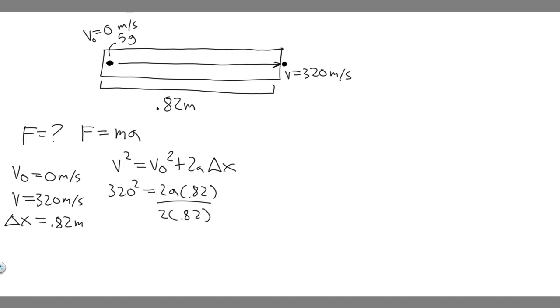And then what we can do is just go ahead and solve. So I'm dividing both sides by 2 times 0.82, that's going to cancel this. So go ahead and do this. So 320 squared, and then divide that by 2 times 0.82. And so if you go ahead and do this, you'll get a is equal to 62439.02439. So you can round this however you want. So I'm just going to round it to, let's just say it's 62400, and then I'm going to put it in scientific notation. So I'm just going to move it back 1, 2, 3, 4.